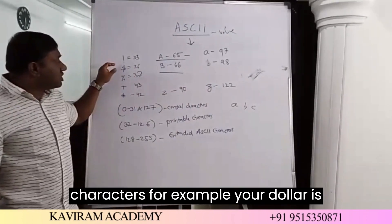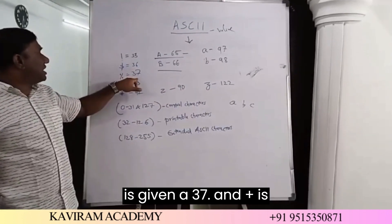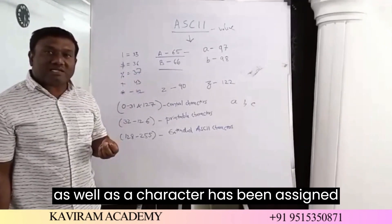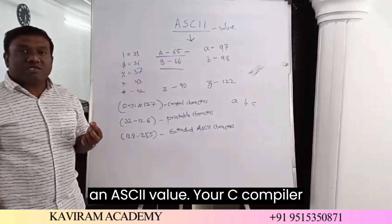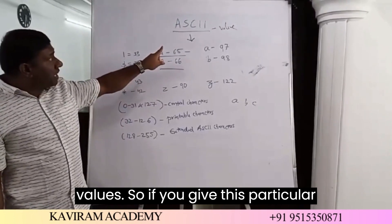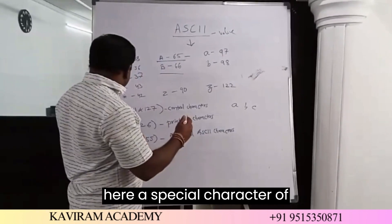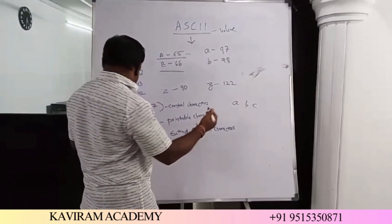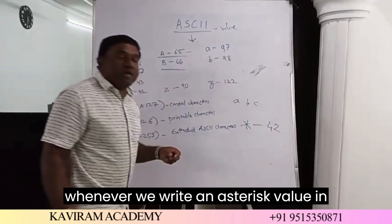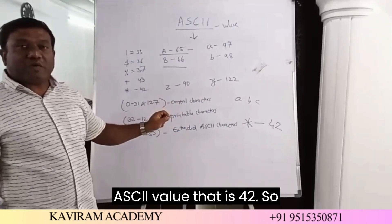Your special characters — for example, dollar is assigned the value 36, percent is given 37, and plus is 43. Each and every special character as well as a character has been assigned an ASCII value. Your C compiler understands only these particular ASCII values. For example, the asterisk character has been given the value 42, so whenever we write an asterisk in our C program, the compiler understands only the ASCII value 42.